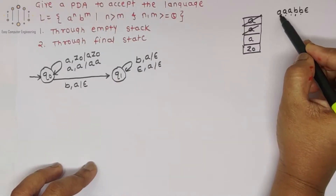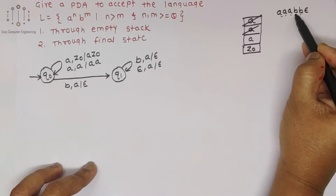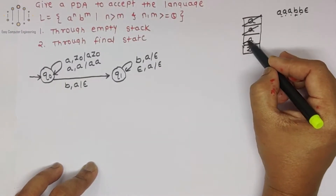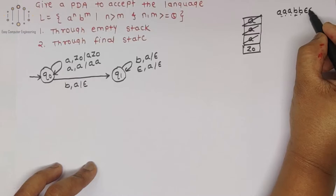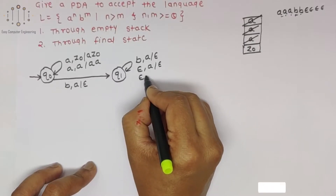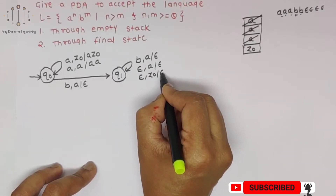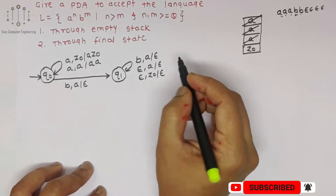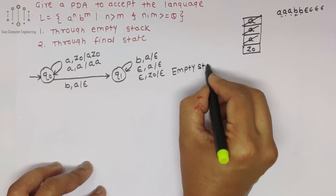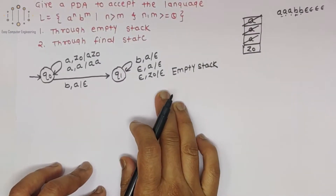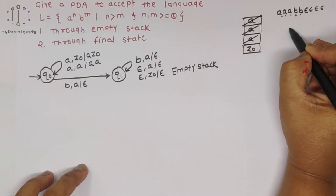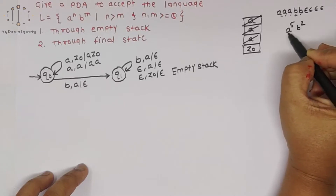This string is accepted because it follows the condition n greater than m. For epsilon we pop the a's one by one. Finally, for the next epsilon when Z0 is in the stack, we pop Z0 as well — that is the empty stack condition. So from these transitions the case a^5 b^2 is handled: a's power is greater than b's power.